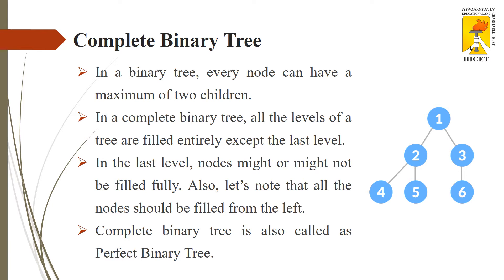What is a complete binary tree? All the levels of the tree are filled entirely. So if I take level 0, level 1, level 2, all the levels are filled entirely, except the last level. In the last level, the nodes might or might not be filled fully — a node can have a single child, 0 children, or even 2 children. Also, it is important that all the nodes should be filled from left to right.